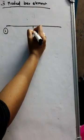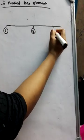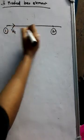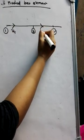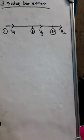This is the first node, this is the third node, and this would be the second node. I will show you u1 here, u3 here, and u2 here. That is the displacement coordinate.